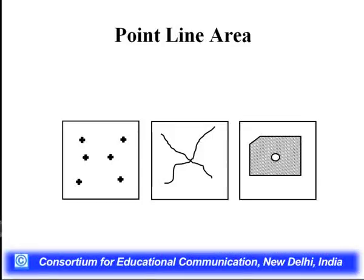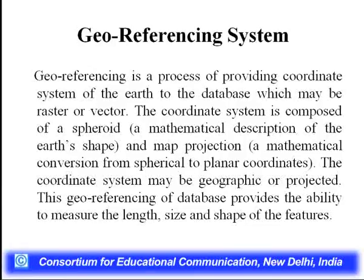Before mapping, georeferencing is very important. Georeferencing is the process of providing a coordinate system — meaning latitude and longitude. We use map projection and the coordinate system may be geographic or projected. This georeferencing of the database provides the ability to measure the length, size, and shape of features. A datum is used to locate precise positions because the shape of the earth is a sphere flattened at the poles. Two types of datum are geocentric datum and local datum.